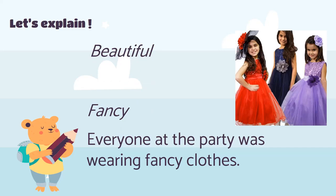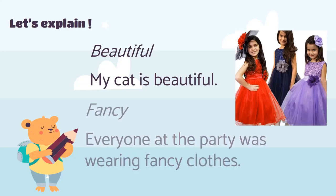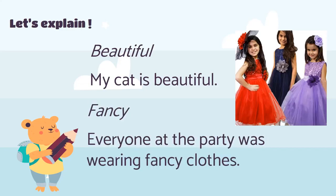The second vocabulary word is 'beautiful.' Beautiful also means nice, but we use it to describe people — specifically females. Like: 'My mom is beautiful,' 'My sister is beautiful,' 'That girl is beautiful.' For males, we say 'handsome': 'My dad is handsome,' 'My brother is handsome.' My cat is beautiful! You can share examples of 'beautiful' and 'fancy' with your parents.